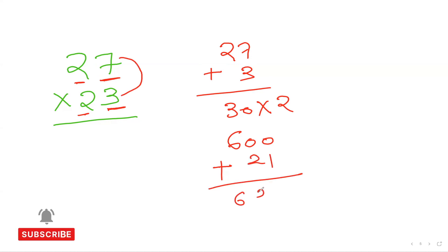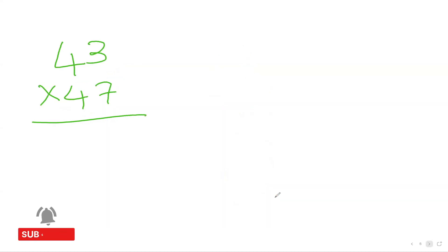And then I can just multiply my last digit, 7 times 3, which is 21. And then you can just add them up, which is 621. I'm done. So now next question is 43 times 47. This is getting a little bit more challenging, a little bit bigger one.